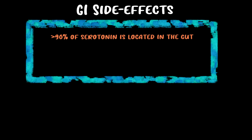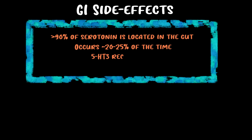Basically every antidepressant can cause nausea, and for SSRIs and SNRIs — anything involved in serotonin — it's typically around 20 to 25 percent. The increase in nausea and vomiting results from the increased serotonin available to the gut, which acts on 5-HT3 receptors. In animal studies, activation of 5-HT3 receptors causes emesis. Nausea tends to wear off due to down-regulation of these receptors.